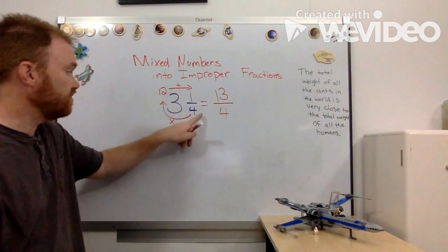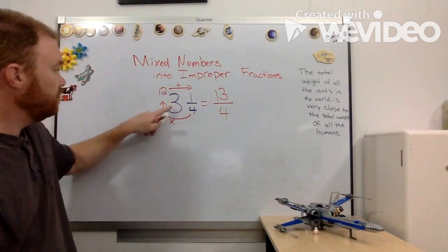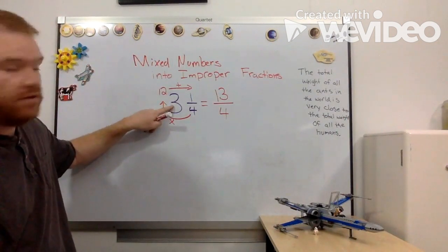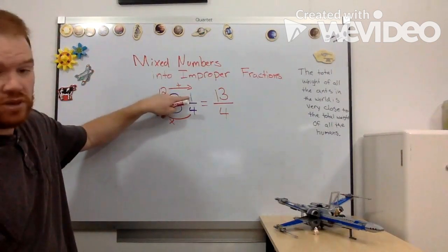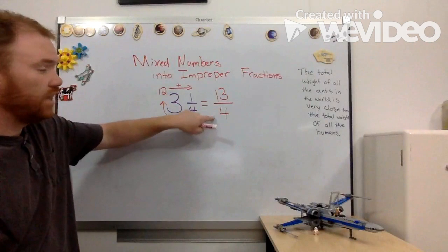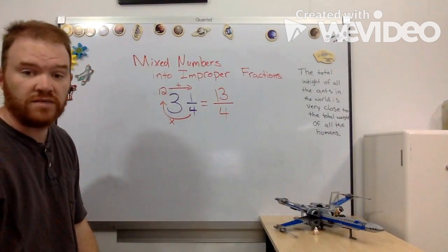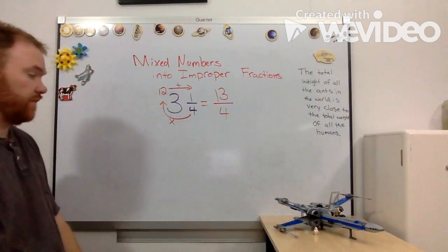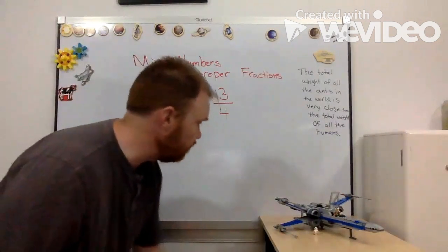Real simple process. Denominator times the whole number plus the numerator gives me my new numerator, and then I keep the denominator the same. I'm going to do another one.